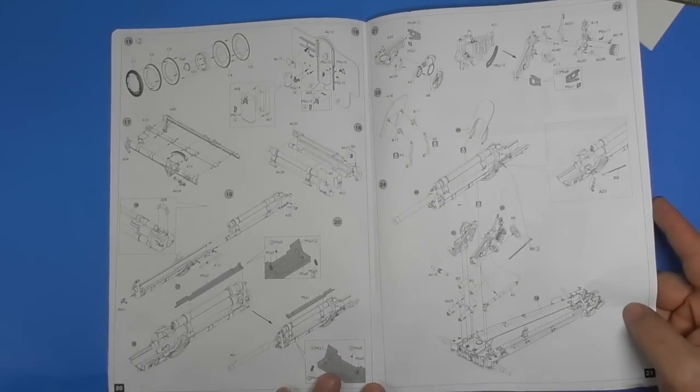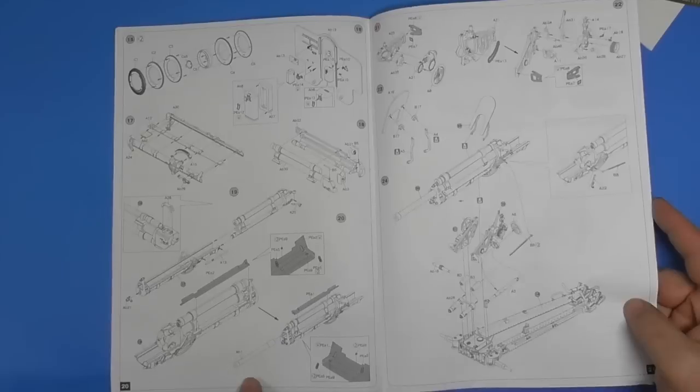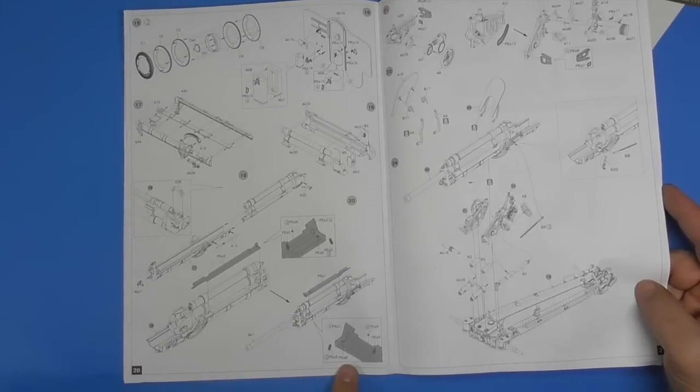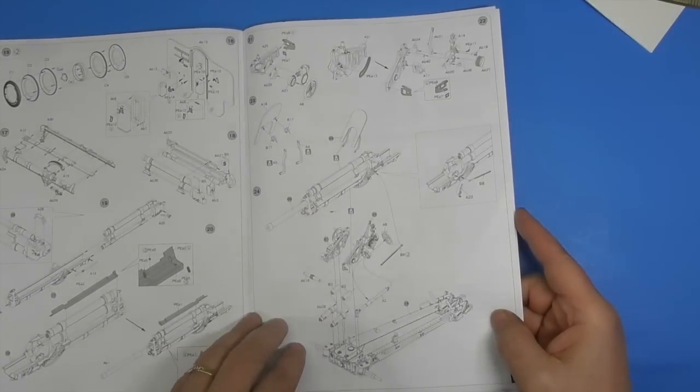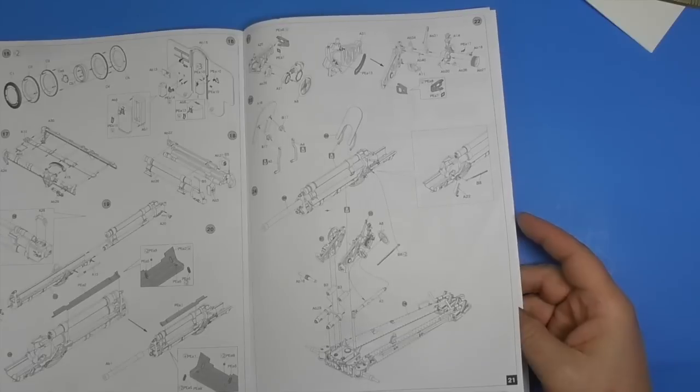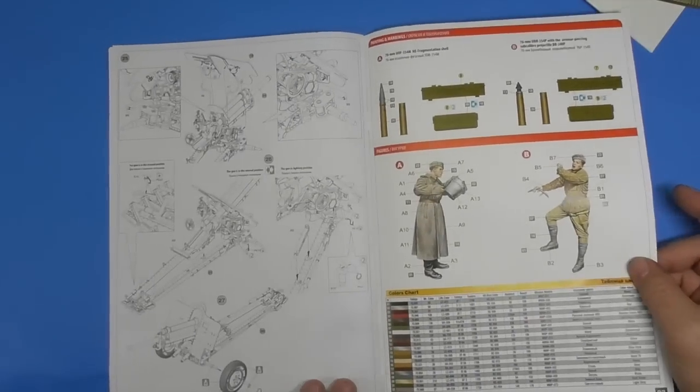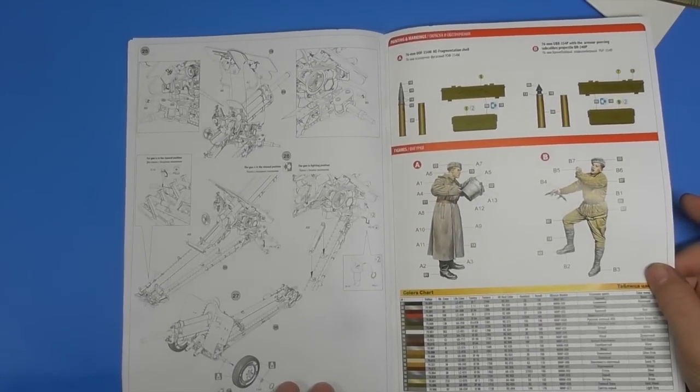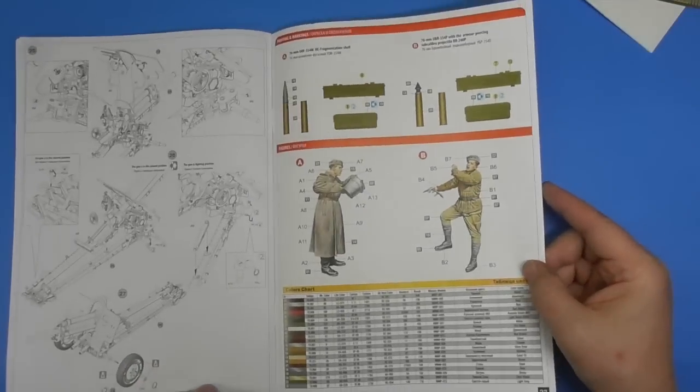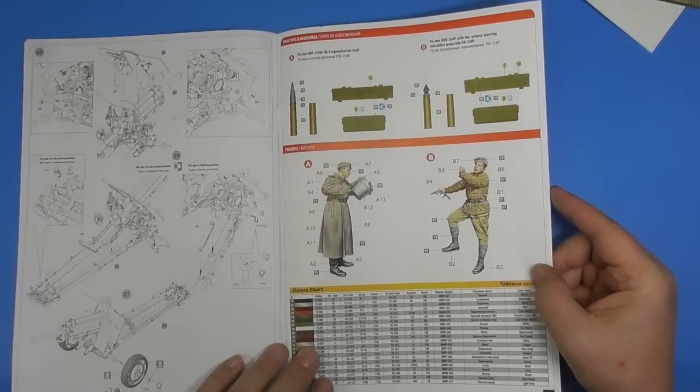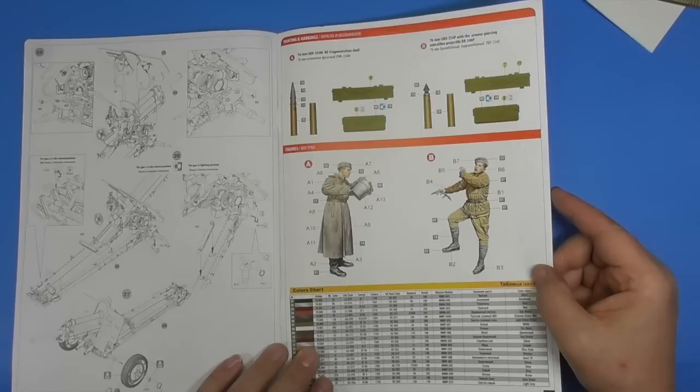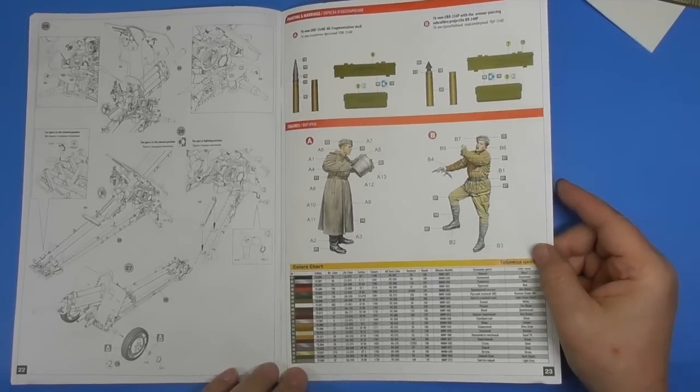And more gun parts. And the wheels are going to go together the same. There's the breech we talked about. The barrel. More PE. Big old gun barrel and the breech going on there. And finishing it off. And paint it all at once. And there's your guide for painting your shells and your storage boxes with the decals. And painting your men.